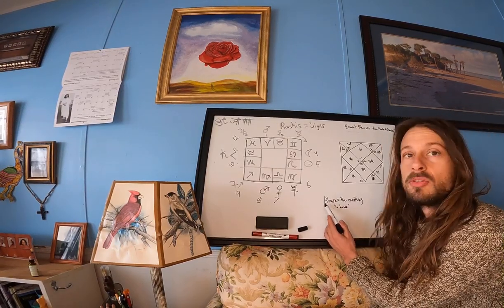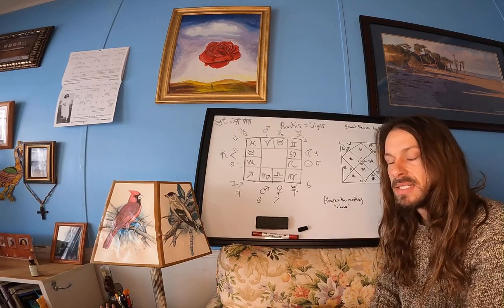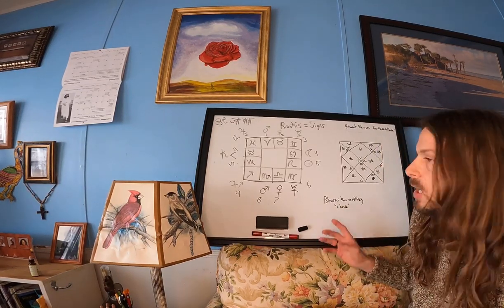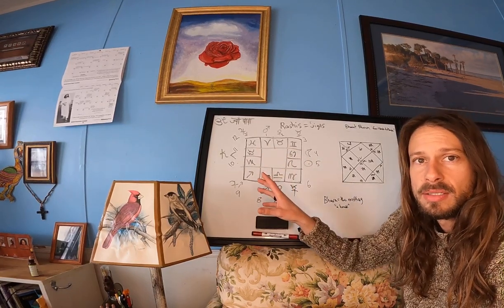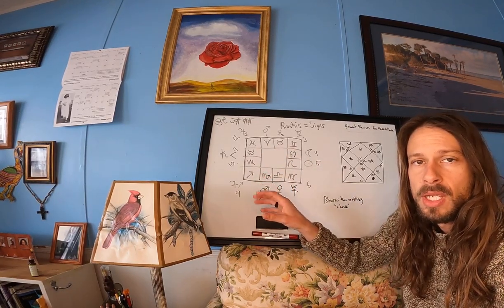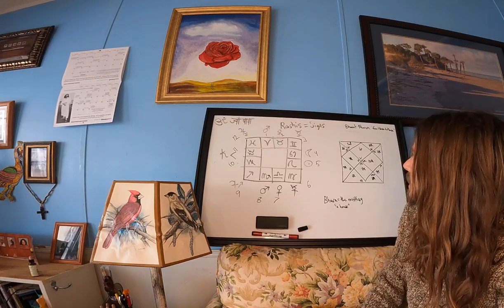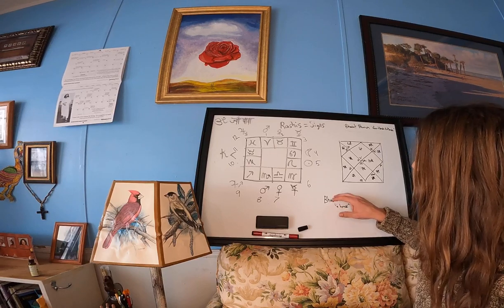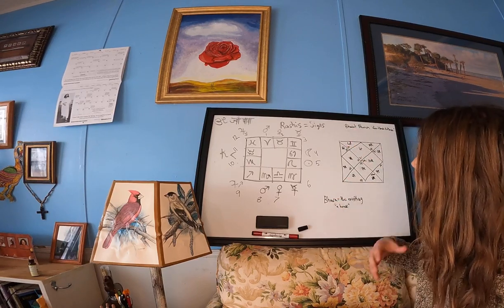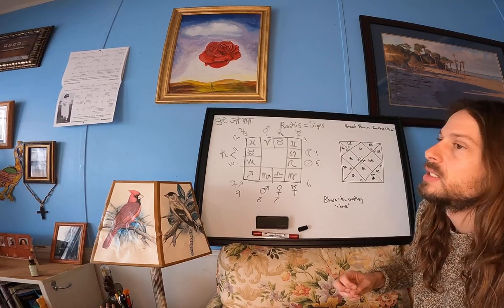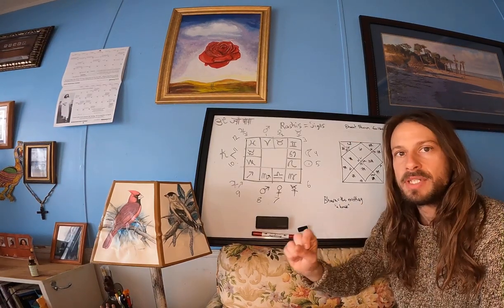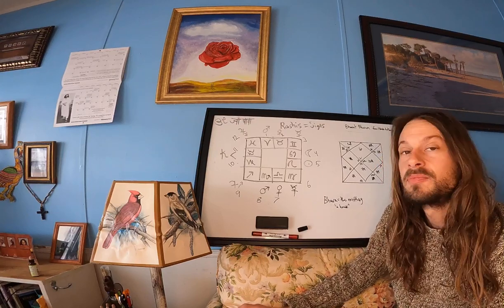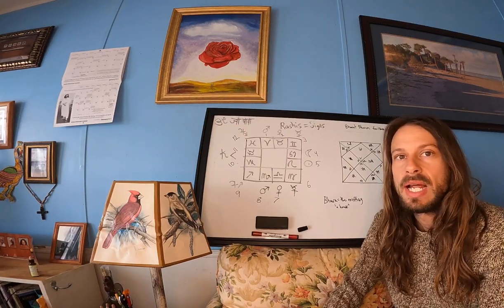So bhava, remember bhava means the existing, existence, the concrete. So it means a house, like the existing final thing or the final product would be the bhava. Bhavat would mean from the bhava or from the house. And then bhavam would mean the house in the object case, objectively, the object of the sentence. So bhavat bhavam means from house to house.